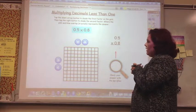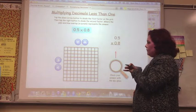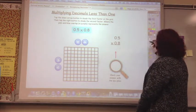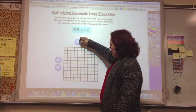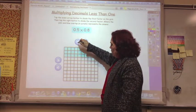So what you have to do to multiply decimals less than one, you've got 5 tenths by 8 tenths. So either one can go either way, but let's do 5 tenths first. One, two, three, four, five.